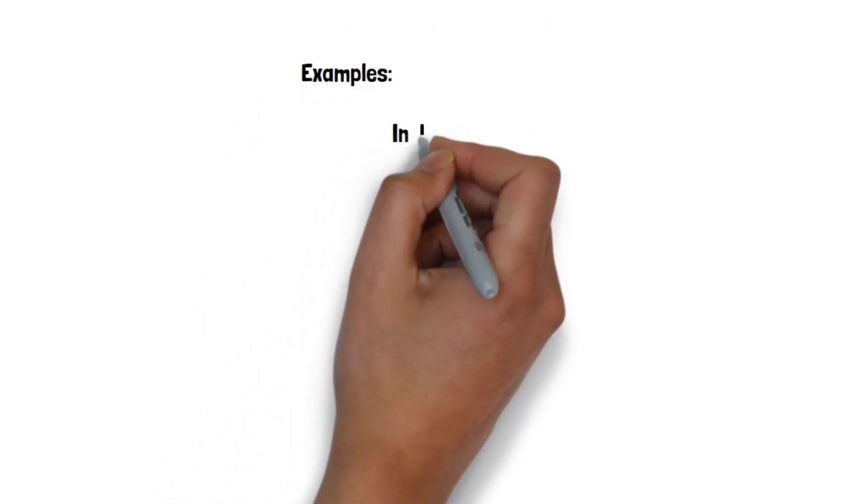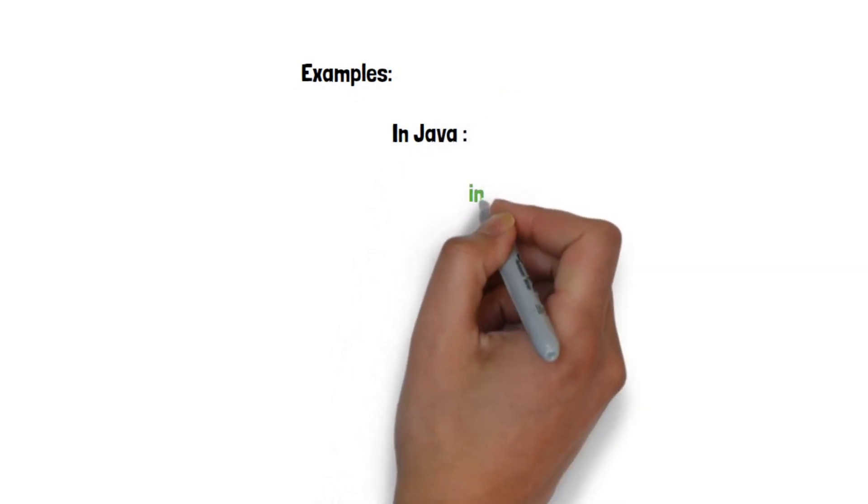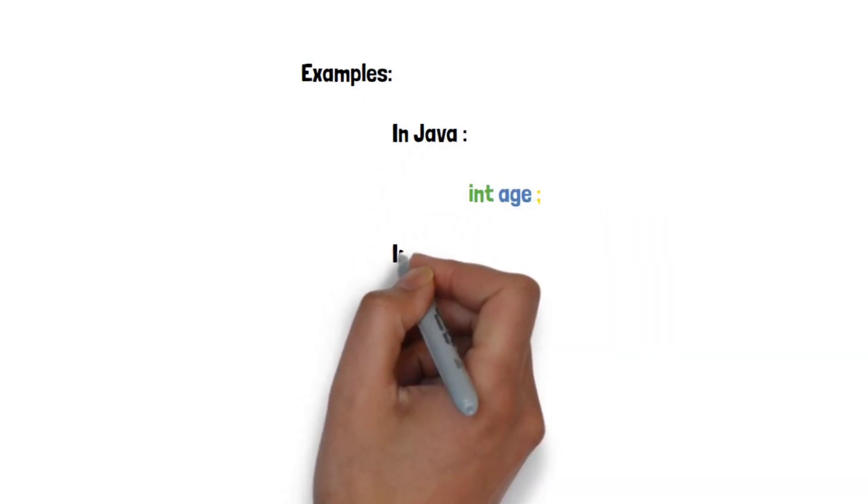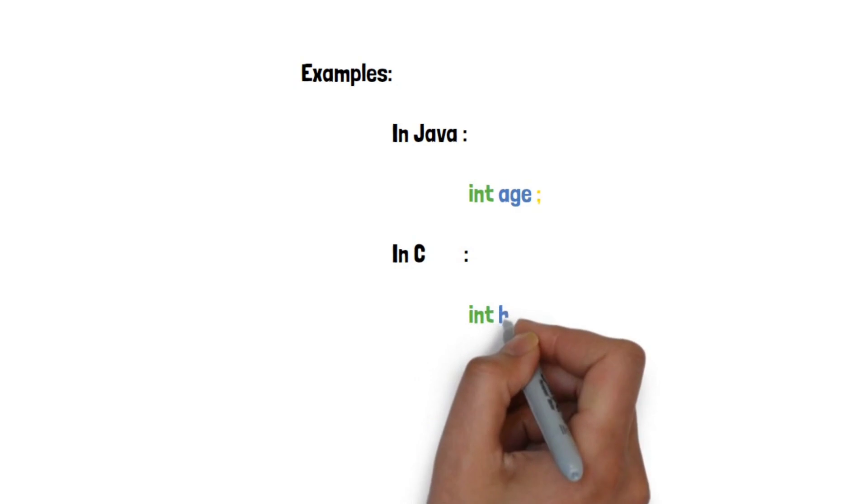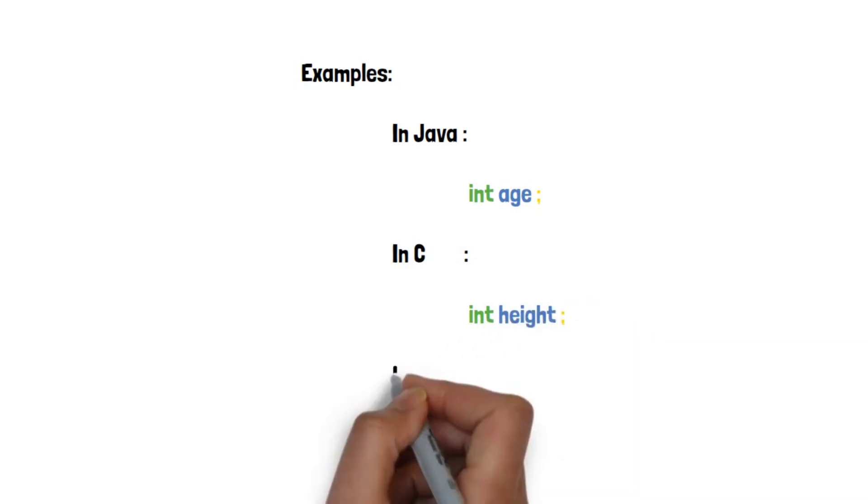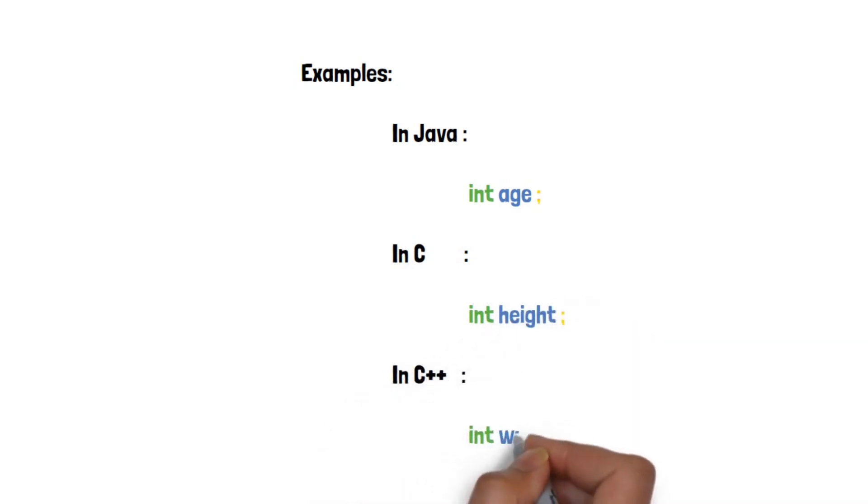In Java: int age, int c, int height, int c++, int width.